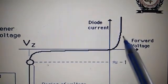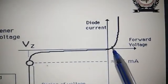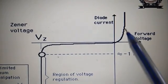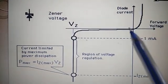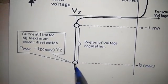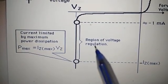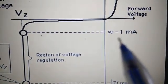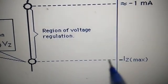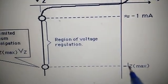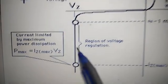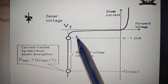In forward bias, the Zener diode works like an ordinary diode. If it is silicon type, the knee voltage will be 0.7V; if it is germanium type, the knee voltage will be 0.3V. In reverse bias, after a certain voltage called the breakdown voltage — also called the Zener voltage — the current will rapidly increase in reverse direction. This region is called the region of voltage regulation. The maximum current IZmax is limited by maximum power dissipation: Pmax = IZmax × VZ.